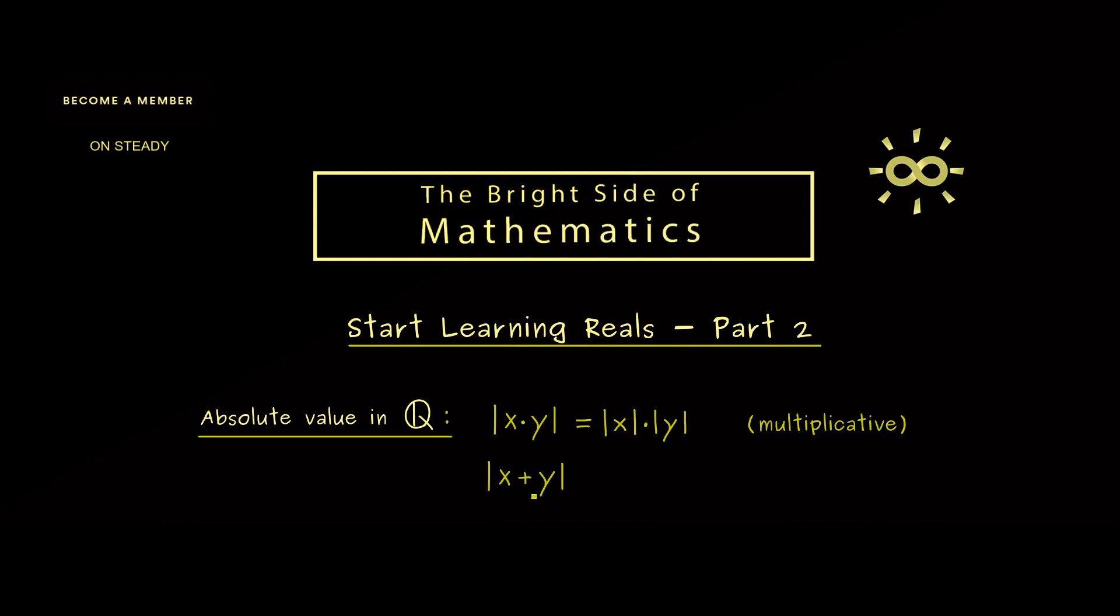Then the next question would be what happens with the other operation. Here we can also pull out the addition, but then in general we just get an inequality. And for this, the mathematician would say the absolute value fulfills the triangle inequality. And the reason why it is called triangle inequality we will see later. Of course the important part here is that we still have an estimate when we measure distances.